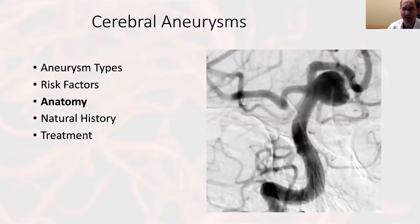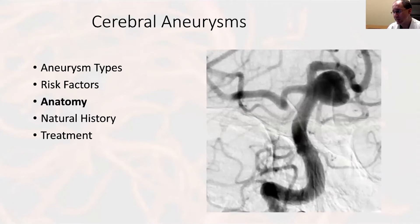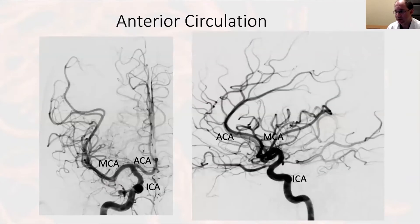We've looked at different types of aneurysms and risk factors for aneurysm formation. I'm now going to review some angiographic anatomy at a variety of levels. Starting very simply, these are angiographic views of the anterior circulation.